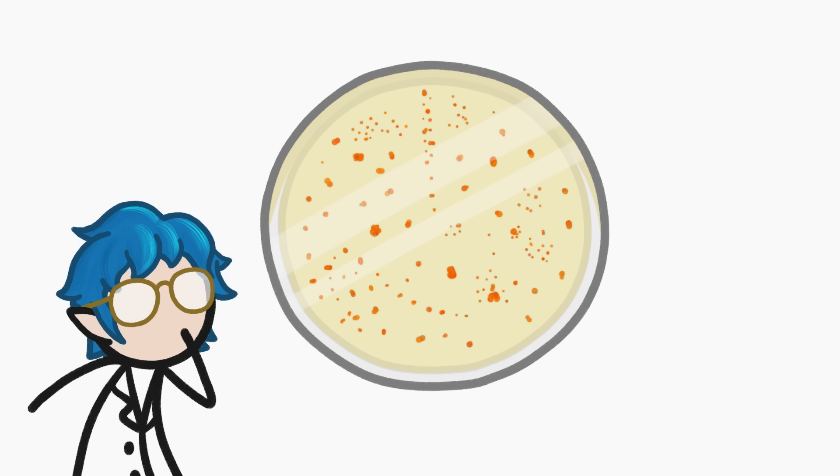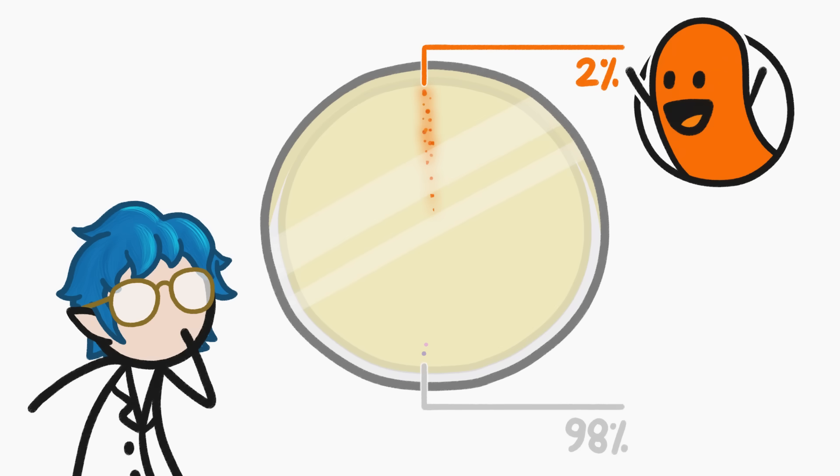Petri dishes are basically the perfect research tool. But as great as they are, they have a huge drawback: only a tiny percentage of bacterial species will grow on the jello. The other 98% of them simply refuse to.